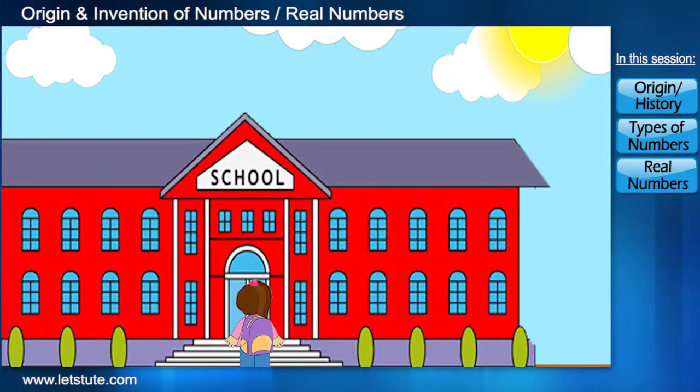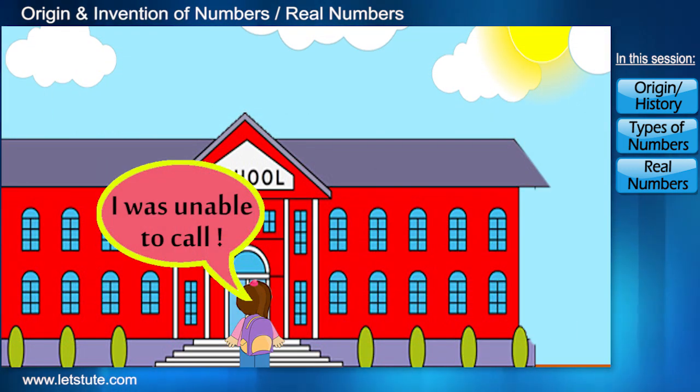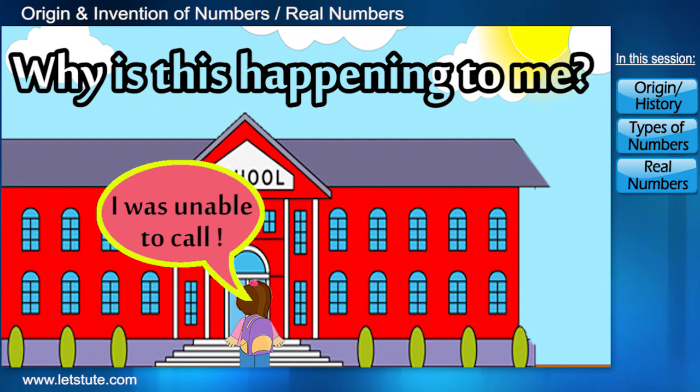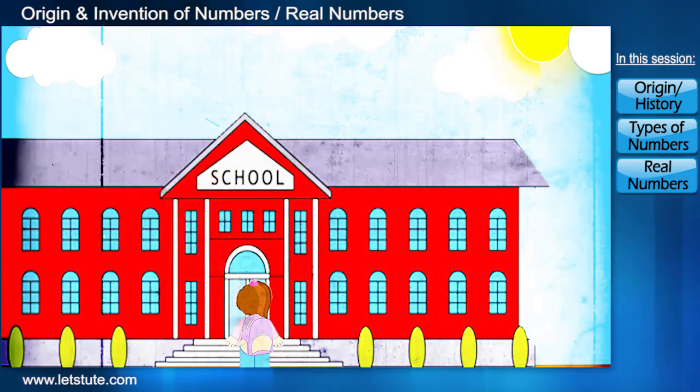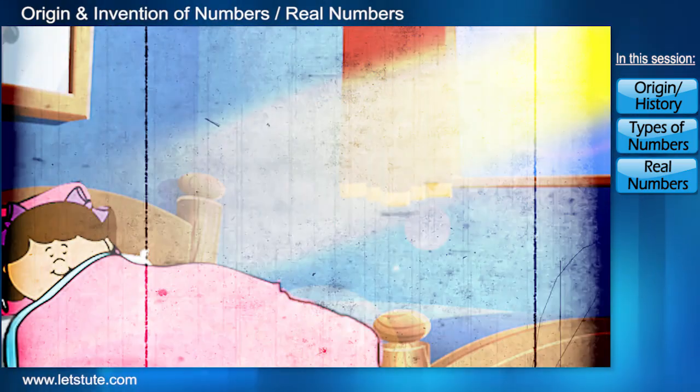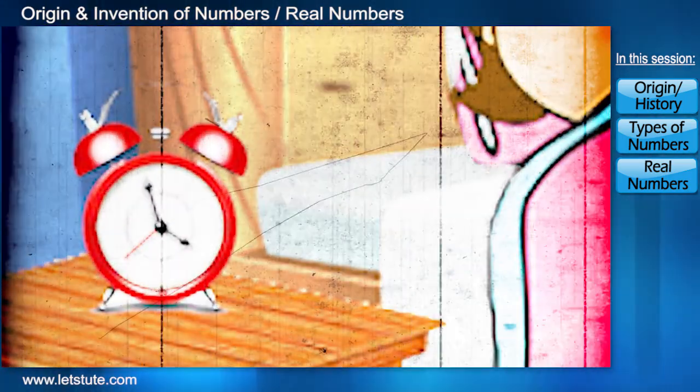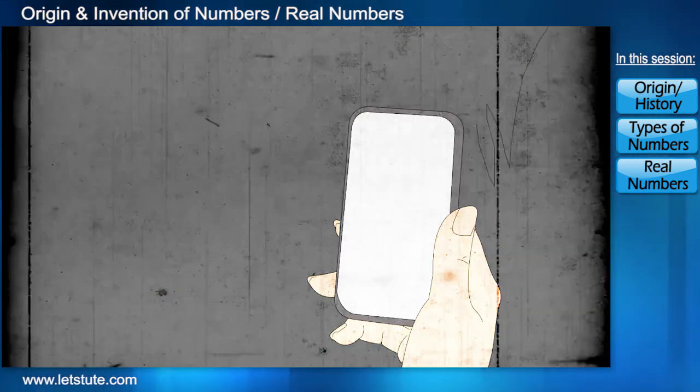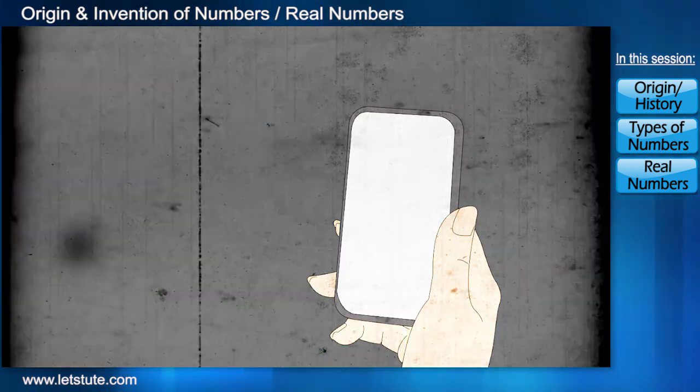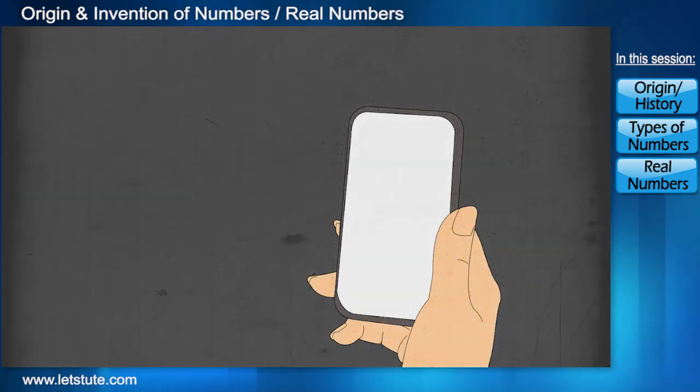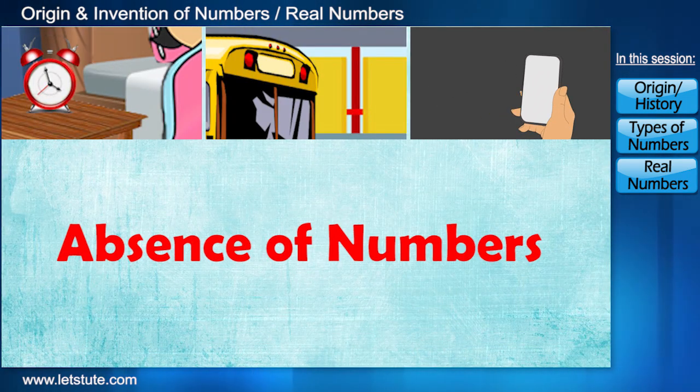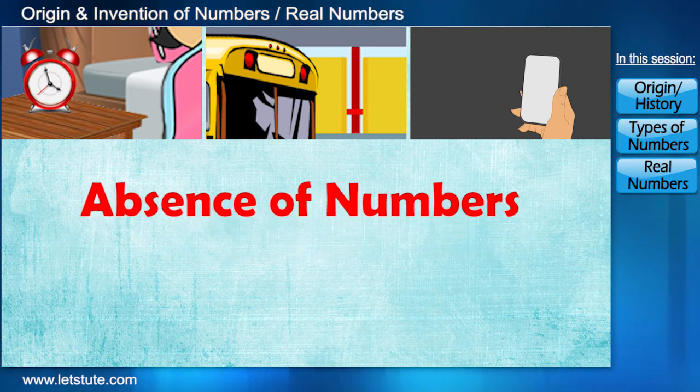I thought to inform my parents but again I failed to do this. But what is missing? Why is this happening to me? Let's go back and check. There were no numbers on my clock, bus was without numbers, and also there were no numbers on my phone. Everything messed up in the absence of numbers.